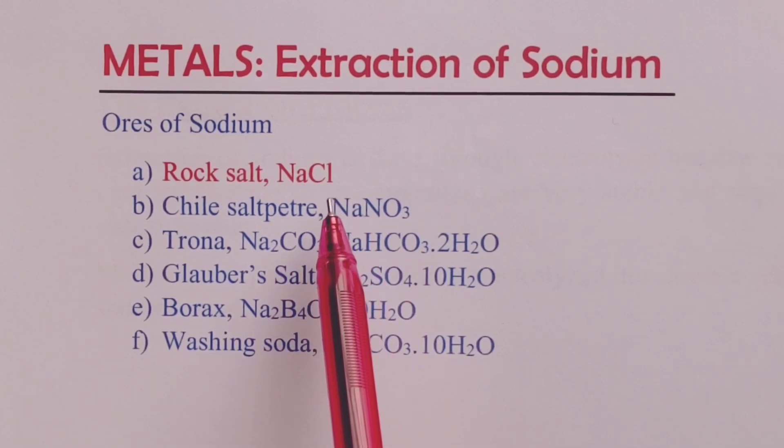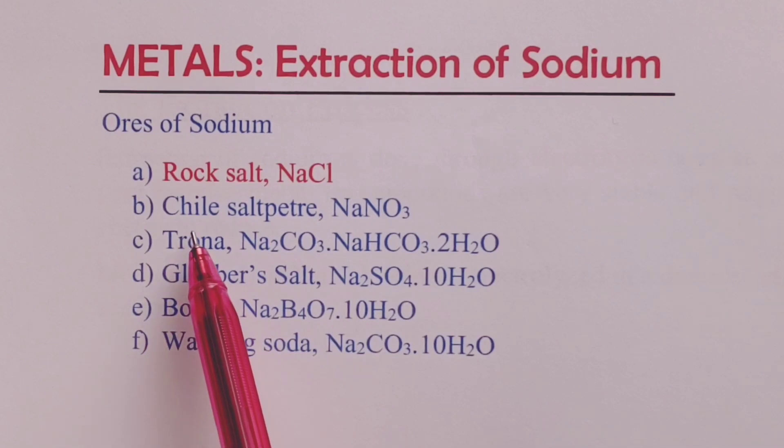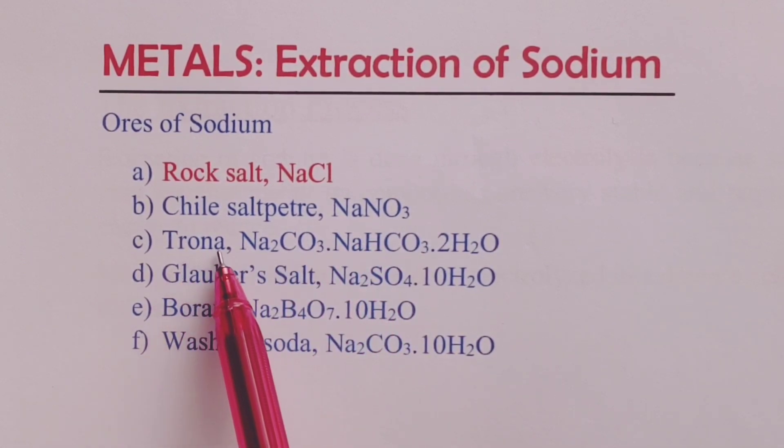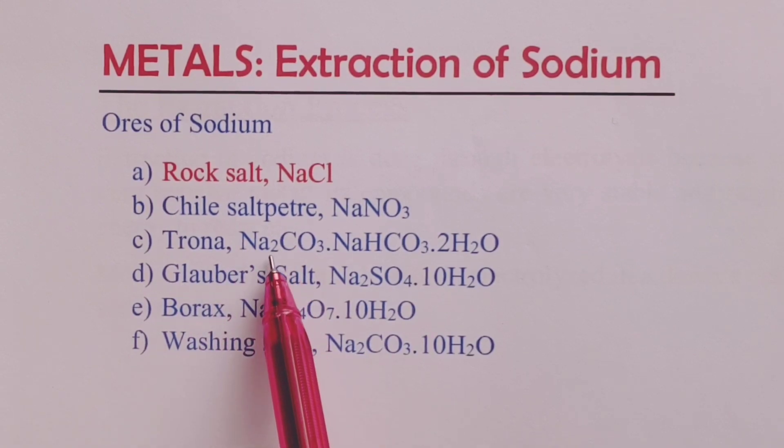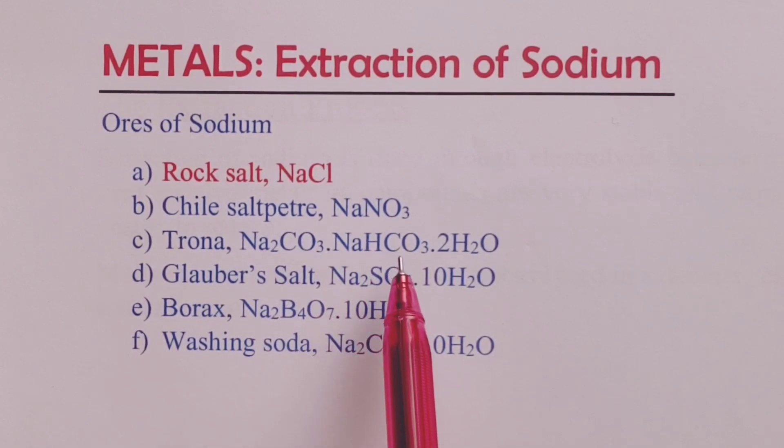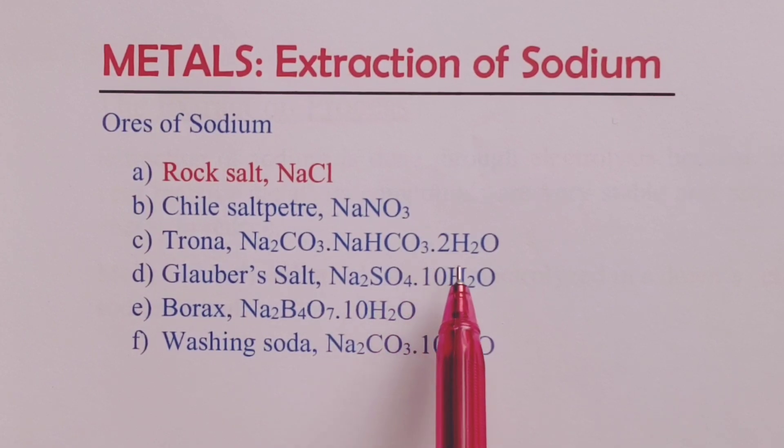The next ore of sodium is Chile saltpeter, which is sodium nitrate (NaNO3). We also have trona, which is a double salt of sodium carbonate and sodium hydrogen carbonate with two waters of crystallization (Na2CO3·NaHCO3·2H2O).